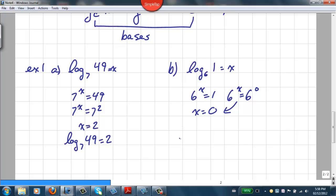And this is an important property: log base 6 of 1 is equal to 0. And in fact, log base anything, as long as it meets our restrictions, c being greater than 0 and c not equal to 1, log base anything of 1 will always be equal to 0.